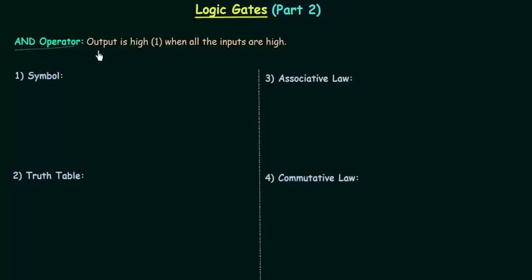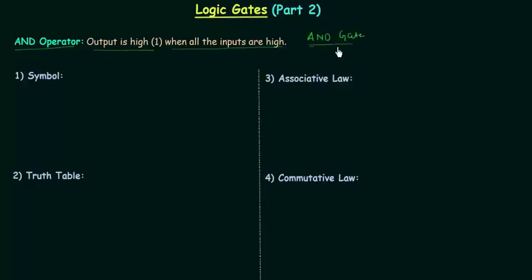In the AND operator, output is high when all the inputs are high. So in AND operator if you want your output to be one, you have to make all your inputs equal to one. We implement the AND operator by using an electronic device, and this electronic device we call the AND gate. So AND gate is an electronic device which is used to implement AND operator.